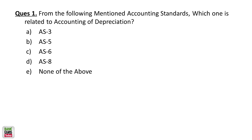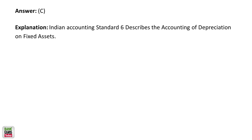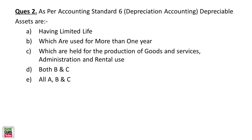We are going to do 10 questions on accounting standards. Question number one: which accounting standard is related to accounting of depreciation? This is the kind of question you will find in the exam. AS3 is related to cash flows. The correct answer is AS6 — Accounting Standard 6 is related to depreciation.